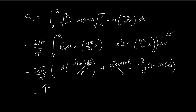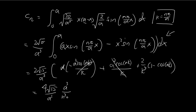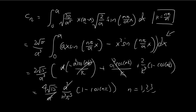Grouping these terms together, we have 4 times the square root of 15 divided by a to the power of 3. For the k cubed term, substituting k equals nπ divided by a back in, we get a cubed divided by n cubed divided by π cubed. So the a's cancel out. And we also have a factor of 1 minus cosine nπ, since ak equals nπ.